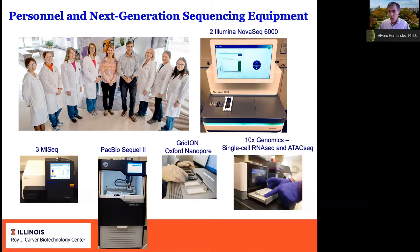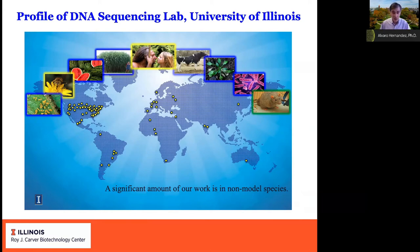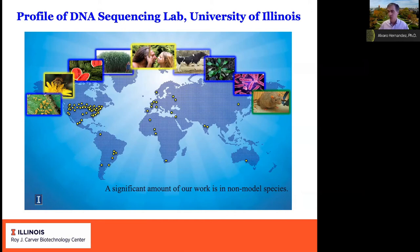Our users are from the University of Illinois and from many private and public institutions across the US and other countries. This wide user base means we process all types of samples from numerous plants, animals, metagenomic communities, and microbes. A significant amount of the work we do is in non-model species. Many of these species have no reference genomes, and we are contacted to perform de novo genome assembly and build resources for applications like genome resequencing, differential gene expression, and genome methylation.